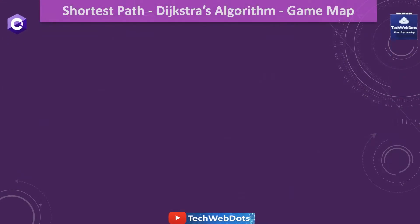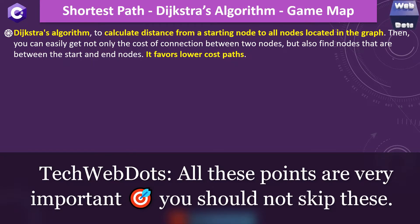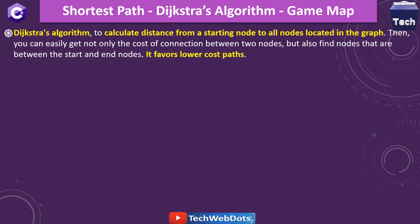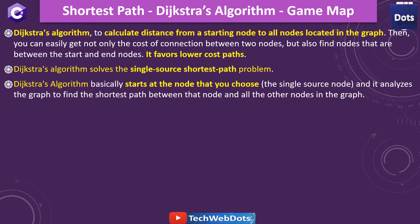So let's move ahead without wasting time. Just to start with the Dijkstra algorithm application in terms of game map, I would like to give you a brief quickly. Dijkstra algorithm calculates distance from a starting node to all the nodes located in the graph, and then you can easily get not only the cost of connection between two nodes but also find nodes that are between the start node and end node, and it always favors the lower cost. Dijkstra algorithm solves the single source shortest path problem — we have to provide the starting node and we know where we want to go.